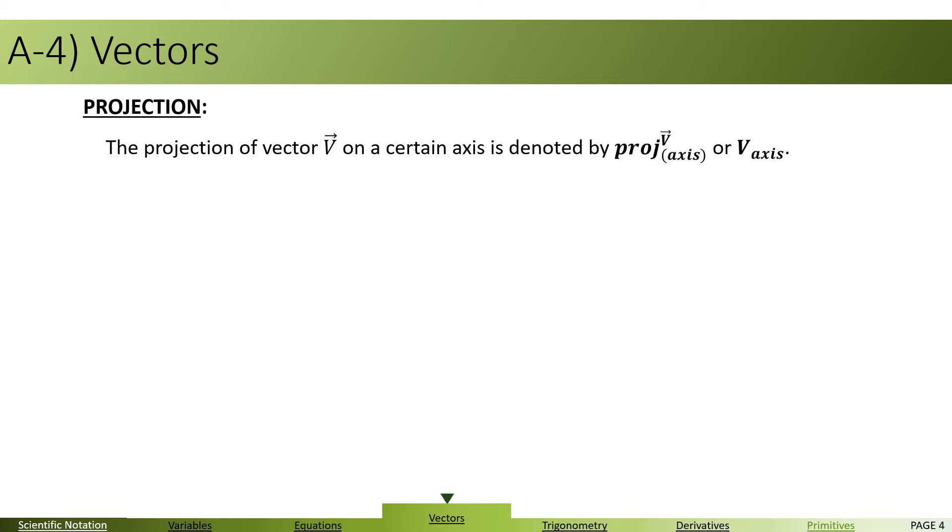The projection of a vector on an axis is denoted as proj V on axis, or V, and we write underneath it the axis name. We have seen this before. For example, we have written, if you remember, Vx as the projection of vector V on X axis. So, these notations are used usually. You can use them directly without explaining what you're doing.